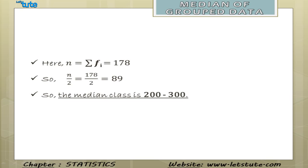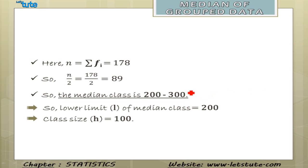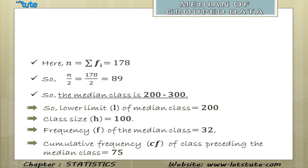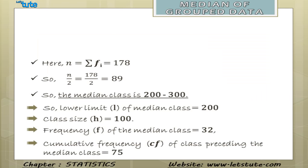The lower limit of the median class is 200, denoted as L. The class size, denoted as H, is 100 — the difference between the upper and lower limits, that is 300 minus 200. The frequency of the median class, F, is 32. Importantly, the cumulative frequency of the class preceding the median class is 75, which we denote as CF.